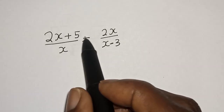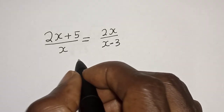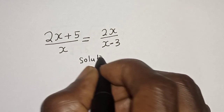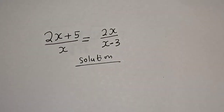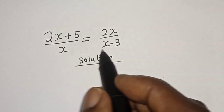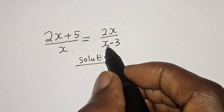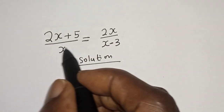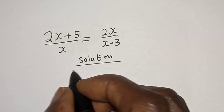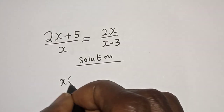Before we proceed, please don't forget to like, share, comment and subscribe. For the solution, the LCM is s bracket s minus 3. Now let's multiply both sides by s into s minus 3.